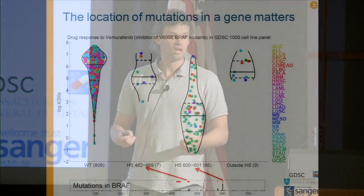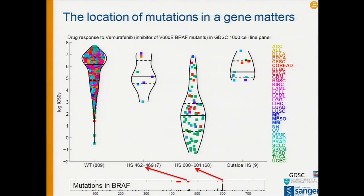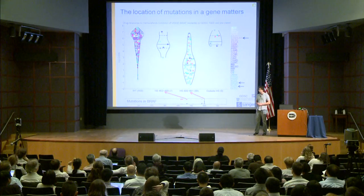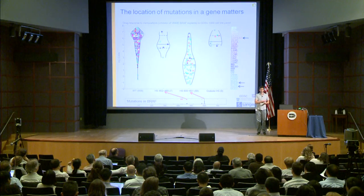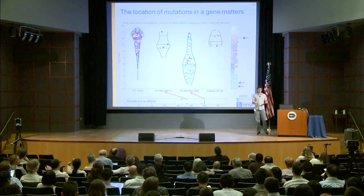It is pretty clear that the location of the mutation matters in this particular case. Not surprisingly, the cell lines with mutations around the 600 position are very sensitive to this drug — most are colorectal, skin, and thyroid cancer cell lines. Cell lines with BRAF mutations in the other hotspot or outside of hotspots are much less sensitive, but more sensitive than the wild types. With this well-known example in mind, we set out to identify mutation hotspots across all genes in TCGA with a decent mutation frequency.